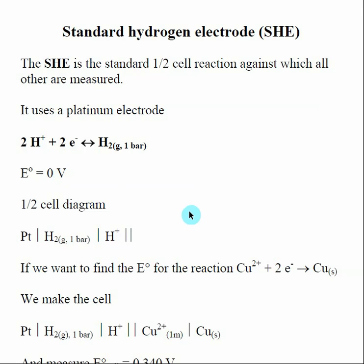The standard hydrogen electrode involves a platinum electrode that is placed in an acidic solution with hydrogen gas. It's a specific electrode that they make, and we have set this to have a half-cell potential of zero volts. We can give the half-cell diagram here.